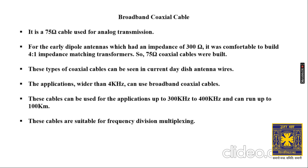Broadband coaxial cable is a 75-ohm cable used for analog transmission. For early dipole antennas with an impedance of 300 ohm, it was comfortable to build a 4:1 impedance matching transformer, so 75-ohm coaxial cables were built. These cables can be seen in current dish antenna wires. Applications wider than 4 kilohertz can use broadband coaxial cable — up to 300–400 kilohertz — and they can run up to 100 kilometers. These cables are also suitable for frequency division multiplexing.